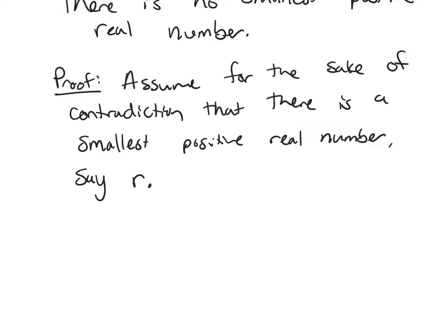So what we're going to do is we're going to consider the number R over 2. Because R is positive, what I know is that R over 2 is also positive, so it's bigger than 0. But it's also going to be less than R.